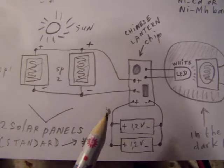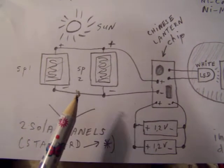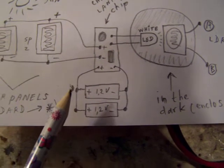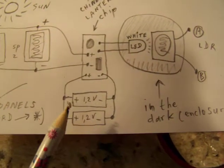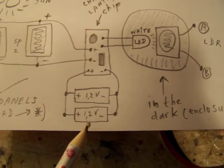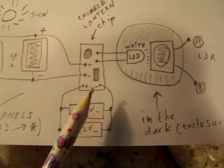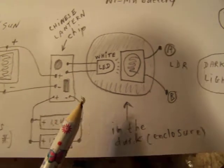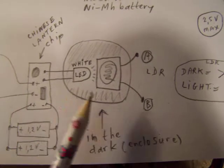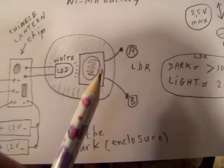Take it apart, mount one solar cell parallel to the existing solar cell, mount two nickel cadmium or nickel manganese cells parallel to the positive and negative from the chip, put the white LED from the lantern and the LDR in the black box.